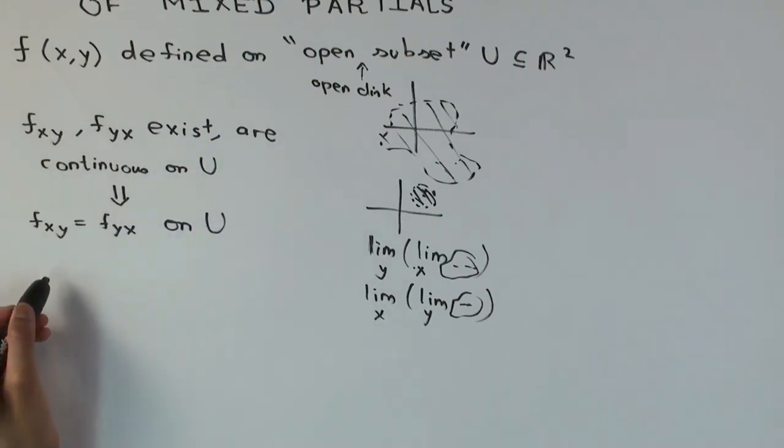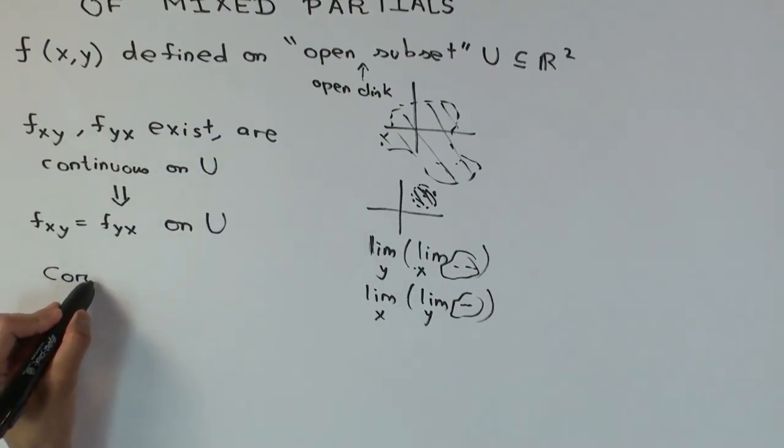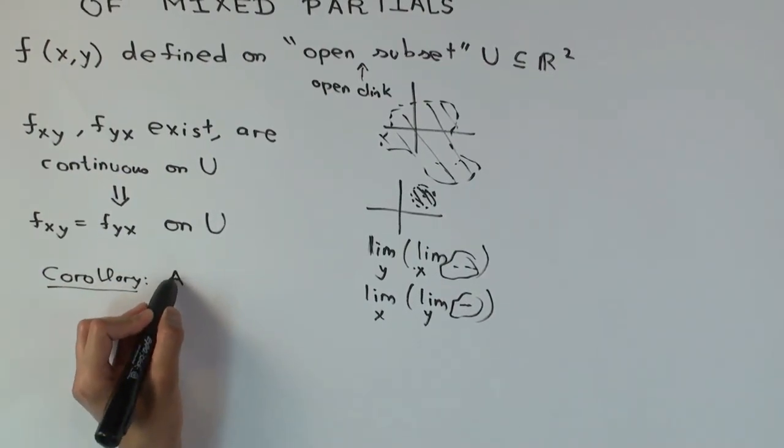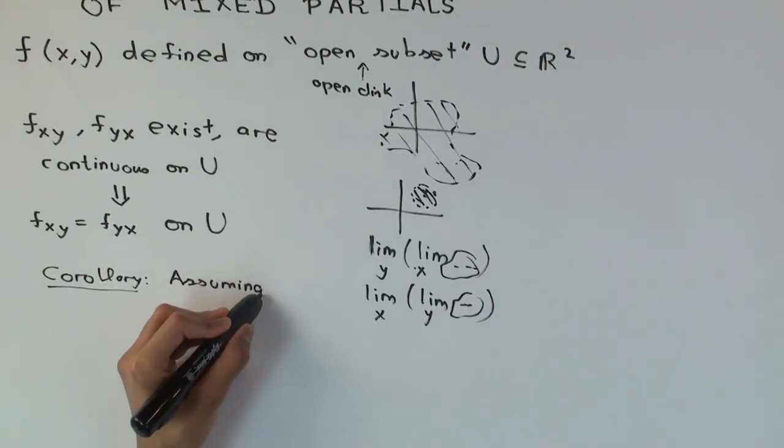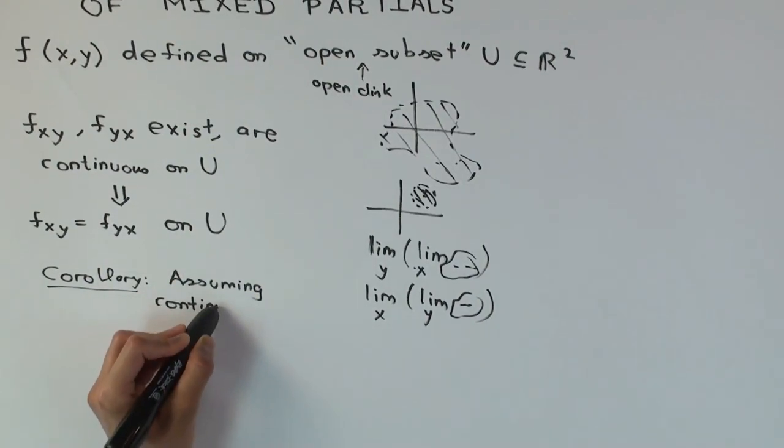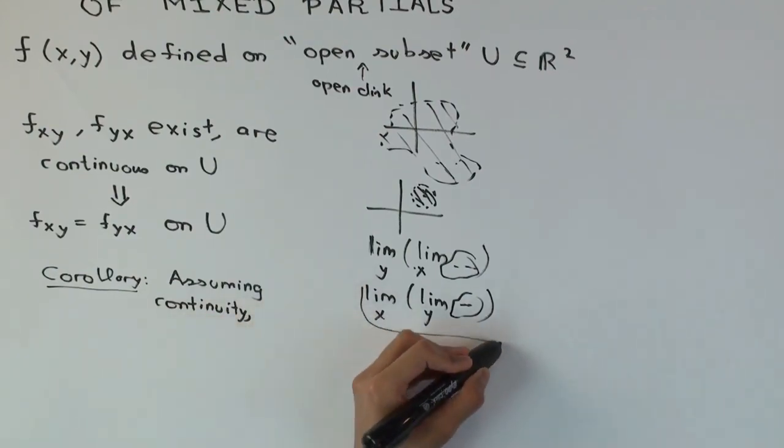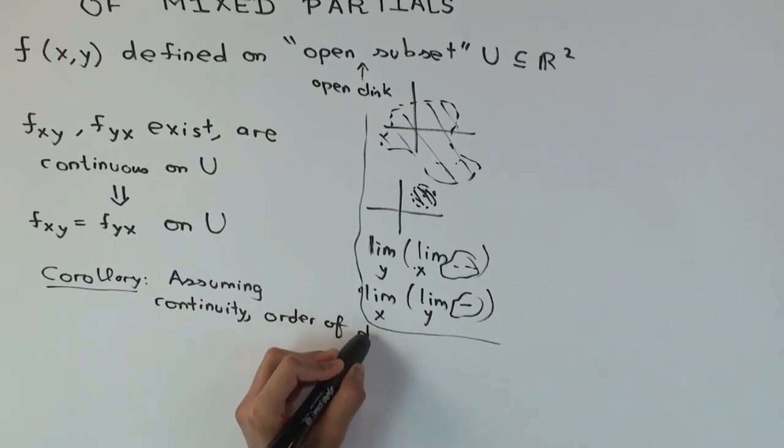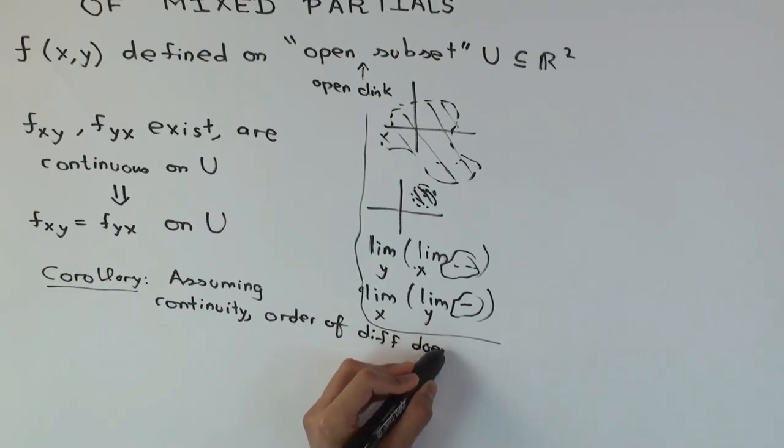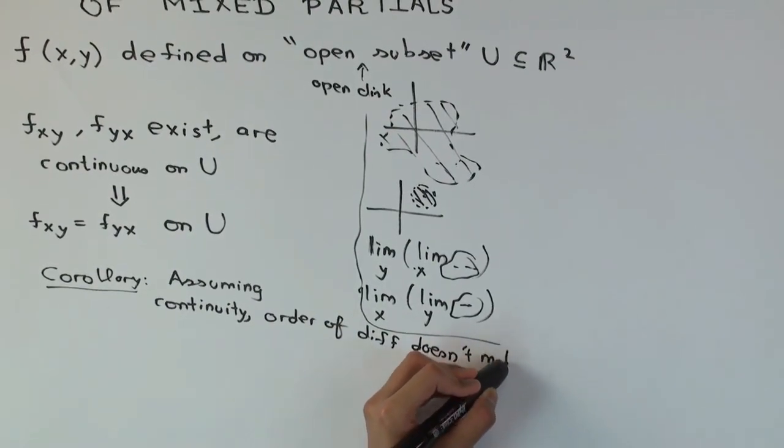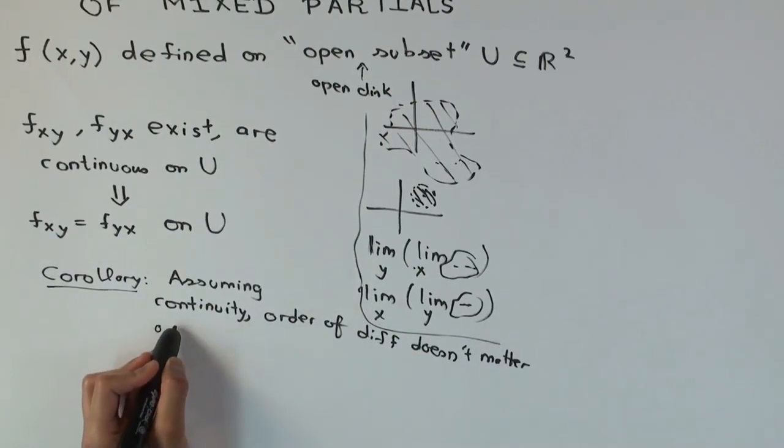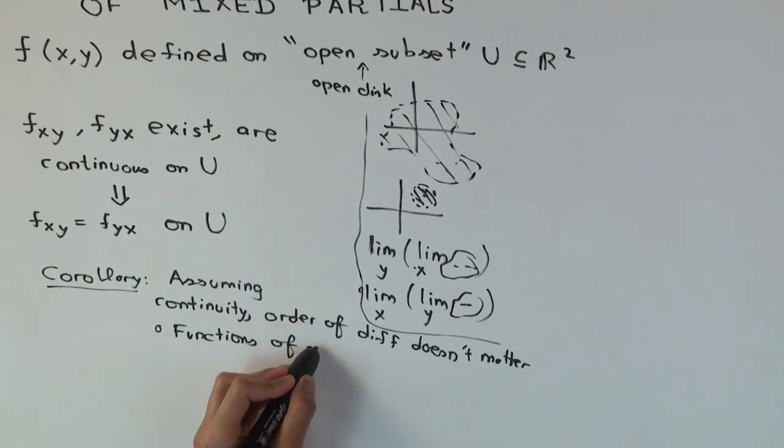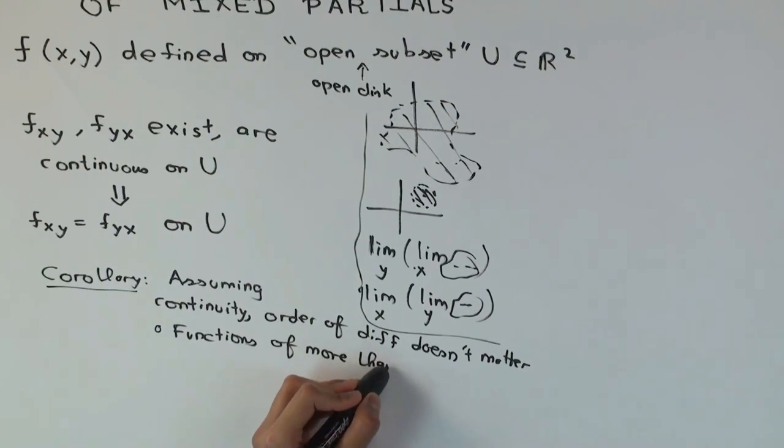A corollary is that, assuming suitable continuity, the order of differentiation doesn't matter even for functions of many variables and higher order derivatives. There are two directions we can generalize: functions of more than two variables and higher order derivatives.